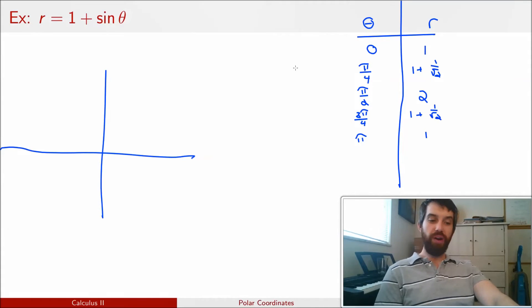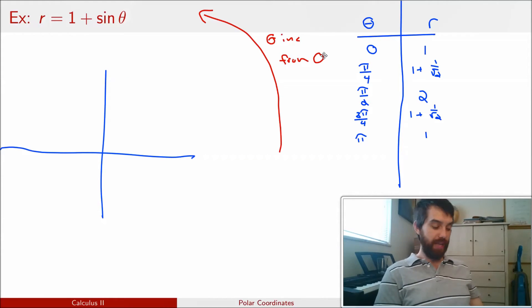First of all, I should remember where theta equal to 0 is. That's right down on the x-axis. And generally, as I go counter-clockwise, this is going to be my theta value. It's increasing and it's increasing from the value of 0 right down on the x-axis.